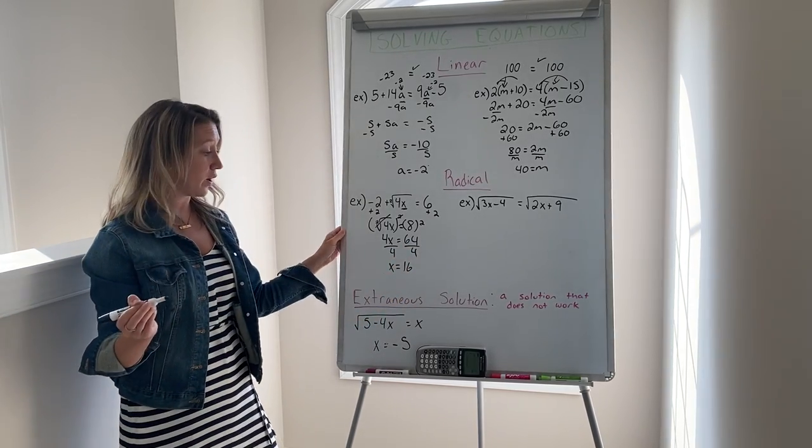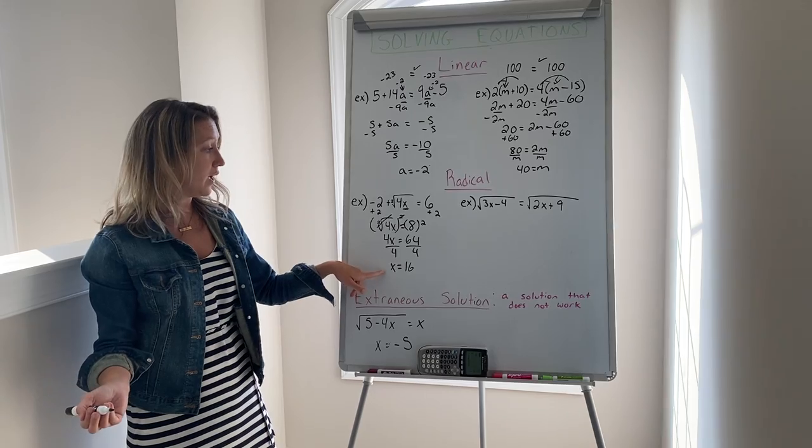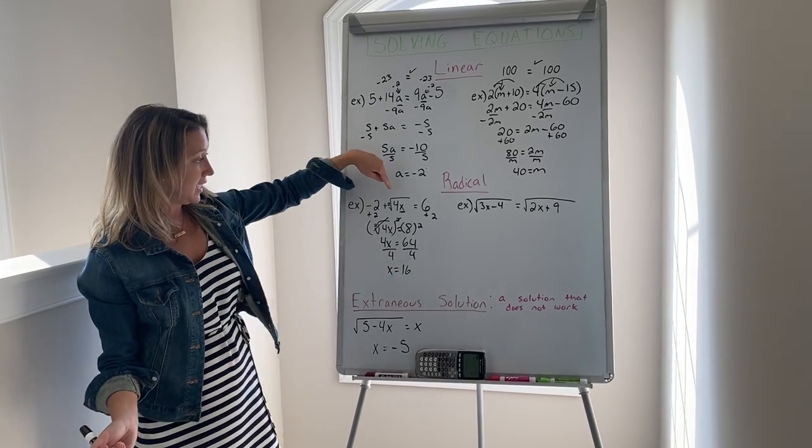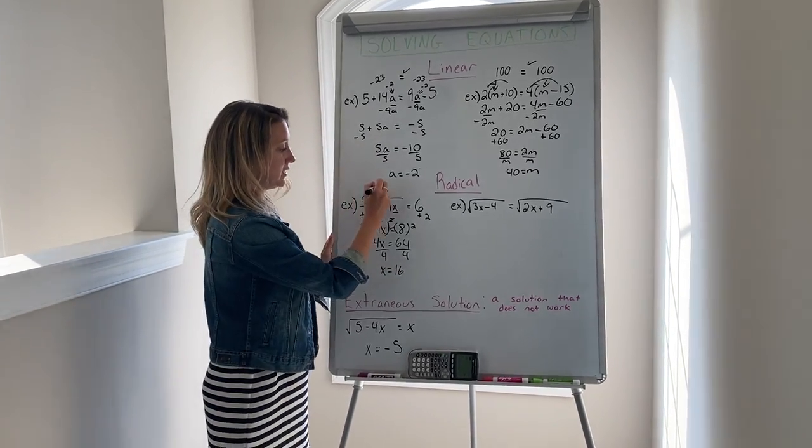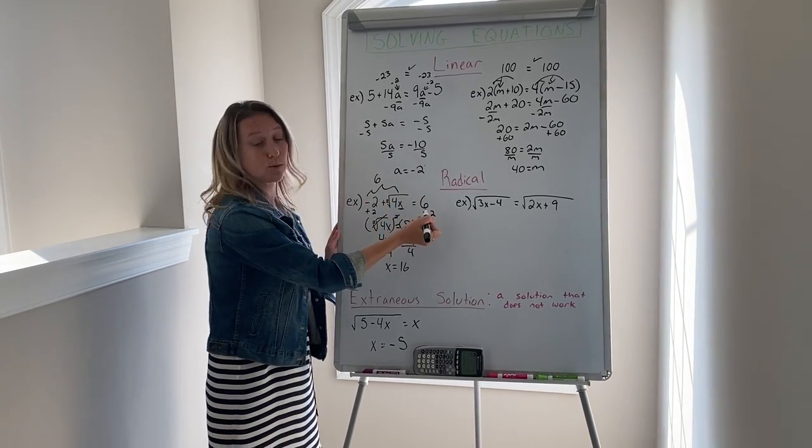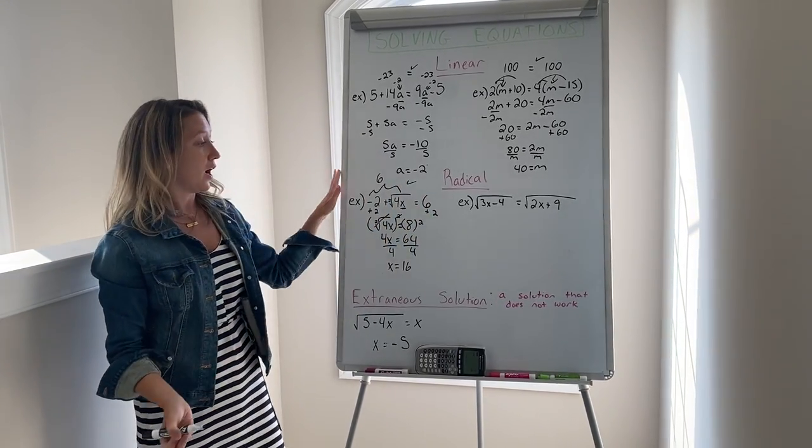Now it's extremely important, especially with radicals, to solve and again to check your answer. You want to plug it back in and make sure that on the left-hand side you get 6, because that's what the right-hand side equals to make sure it's true.